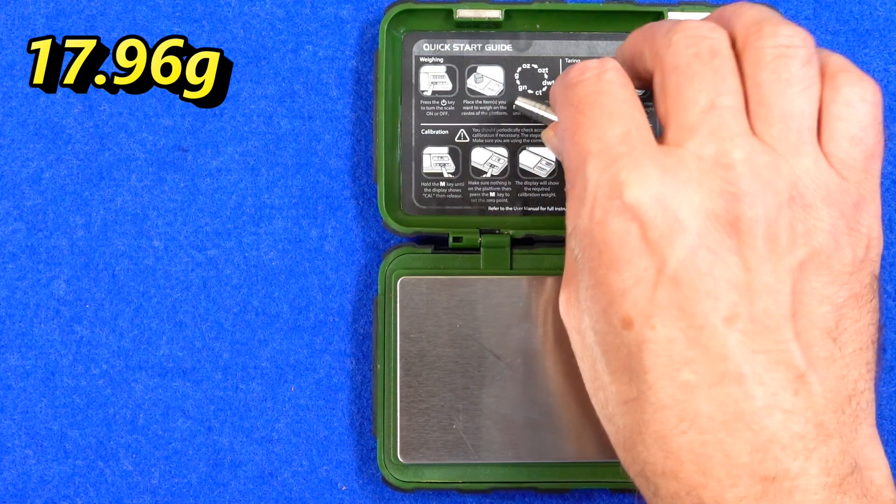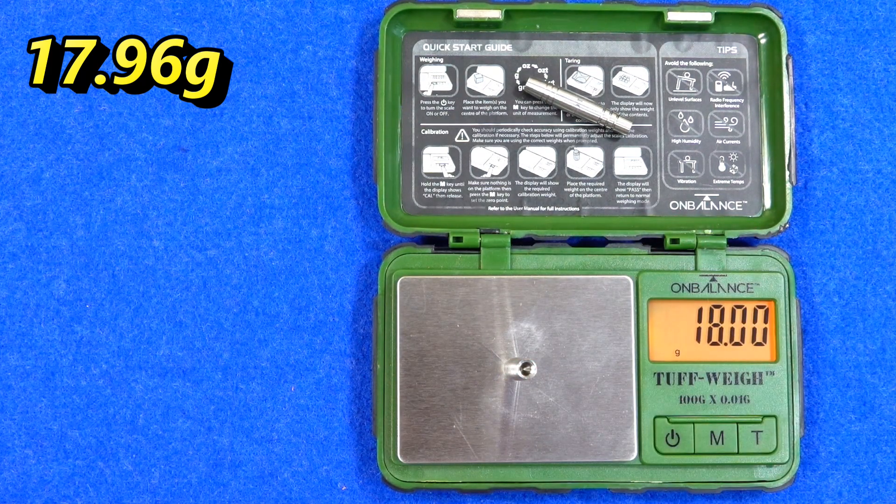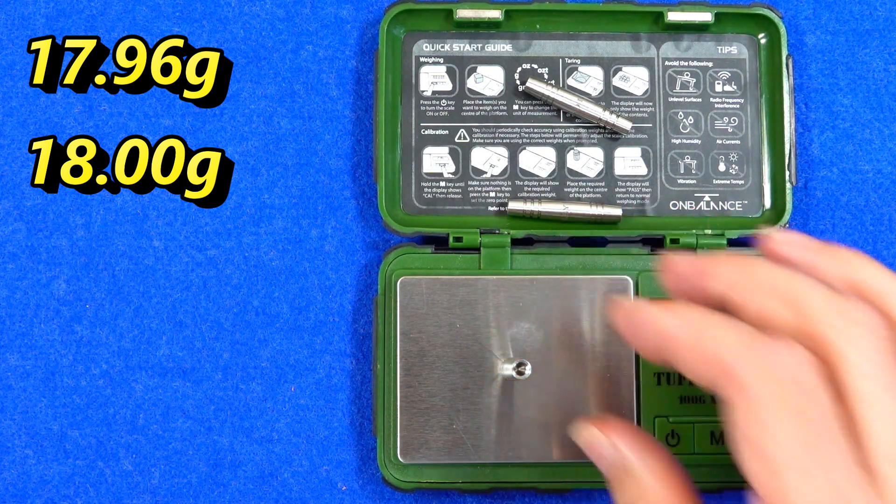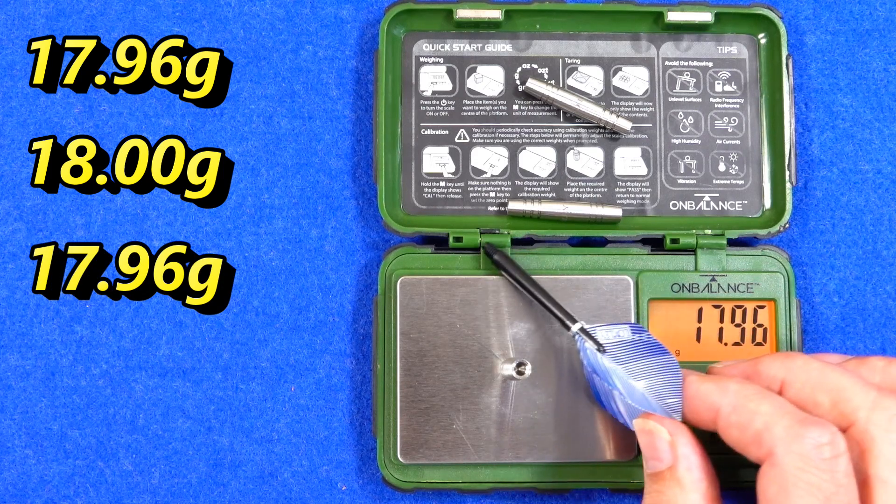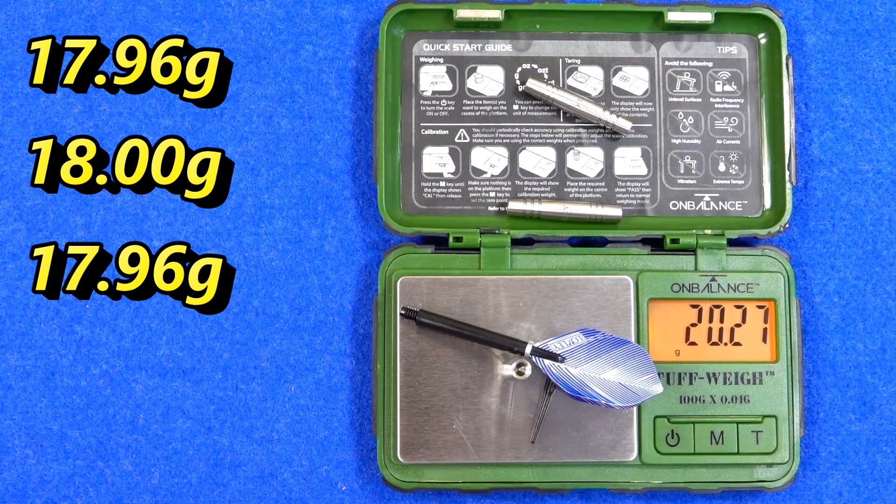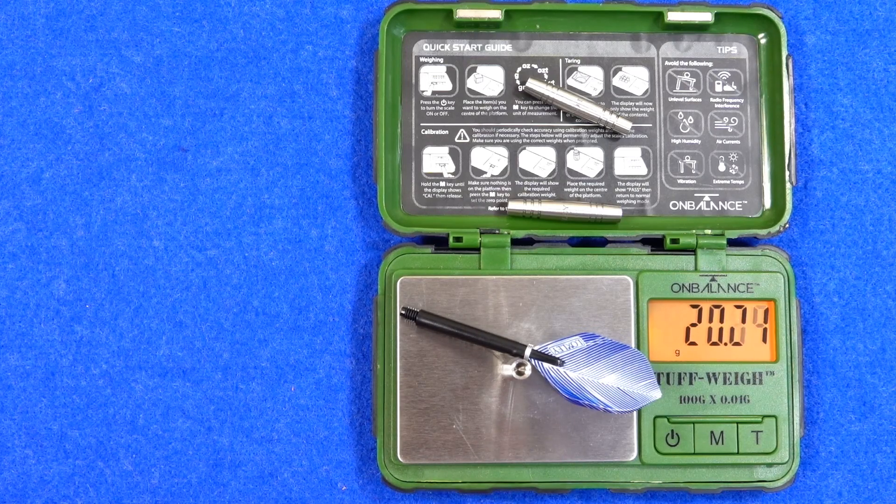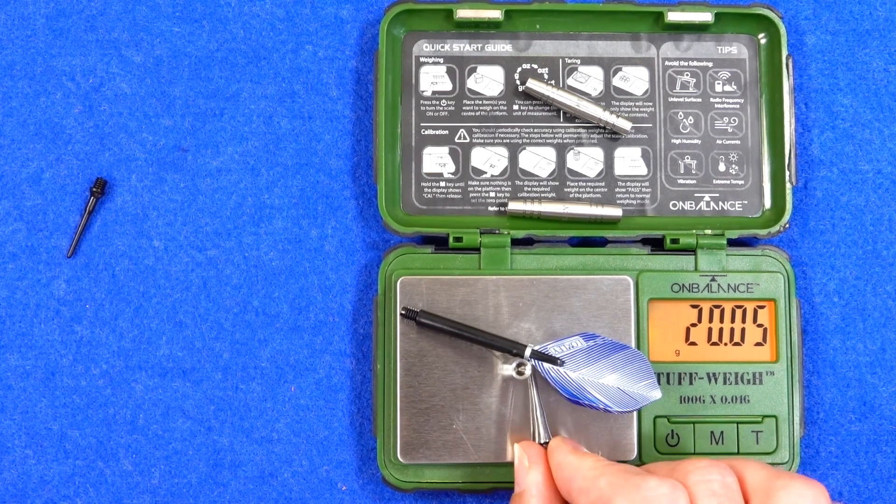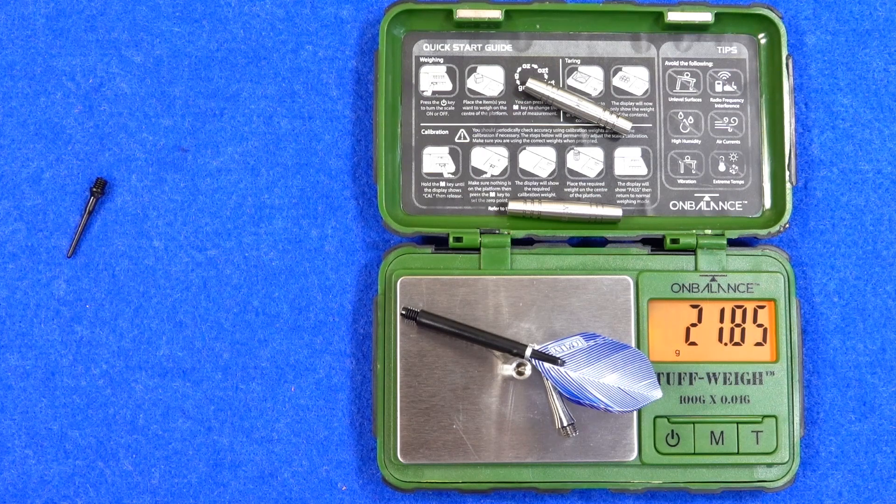17.96 grams, 18 grams exactly, and 17.96. So with the setup with stems flights and soft tips it would be 20.27 grams. I'll take that soft tip away and add the Cosmo Fit Metal conversion points that would be 21.85 grams.